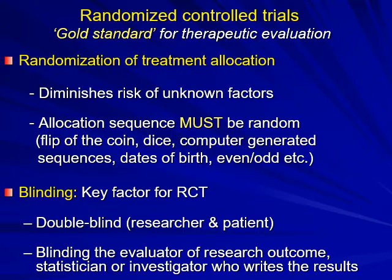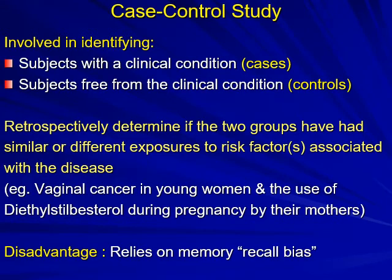Blinding the evaluator of research outcome — the researcher or the investigator who writes the results — can be blinded. They should not know which is the test group and which is the control group. A case-control study involves identifying subjects with clinical conditions (cases) and subjects free from clinical conditions (controls). The cases and controls are evaluated retrospectively, determining if the two groups have had similar or different exposures to risk factors associated with the disease.